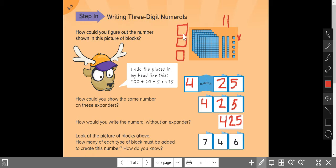So now I have 1, 2, 3, 4, 5, 6, 7. There's my 7. I have 1, 2, 3, 4. There's my 4. And then I have 1, 2, 3, 4, 5, 6. There's my 6.